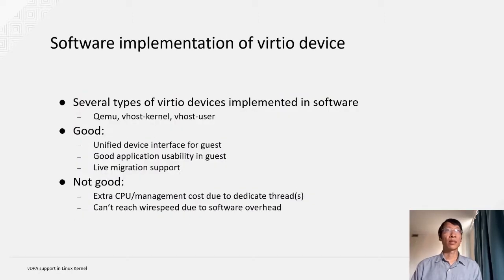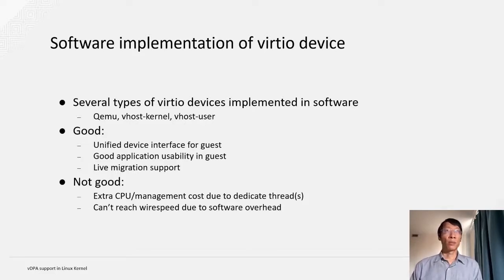Several different types of virtio devices have been implemented in software. The first device implementation is done in QEMU, but its performance cannot satisfy our requirement. Then they move the data plane to the kernel by using the vhost protocol. It can do better than QEMU, but it's still not sufficient. So we offload the data plane from QEMU to another dedicated remote process through the vhost-user protocol. Then it can achieve the best performance that a software data plane can ever achieve.